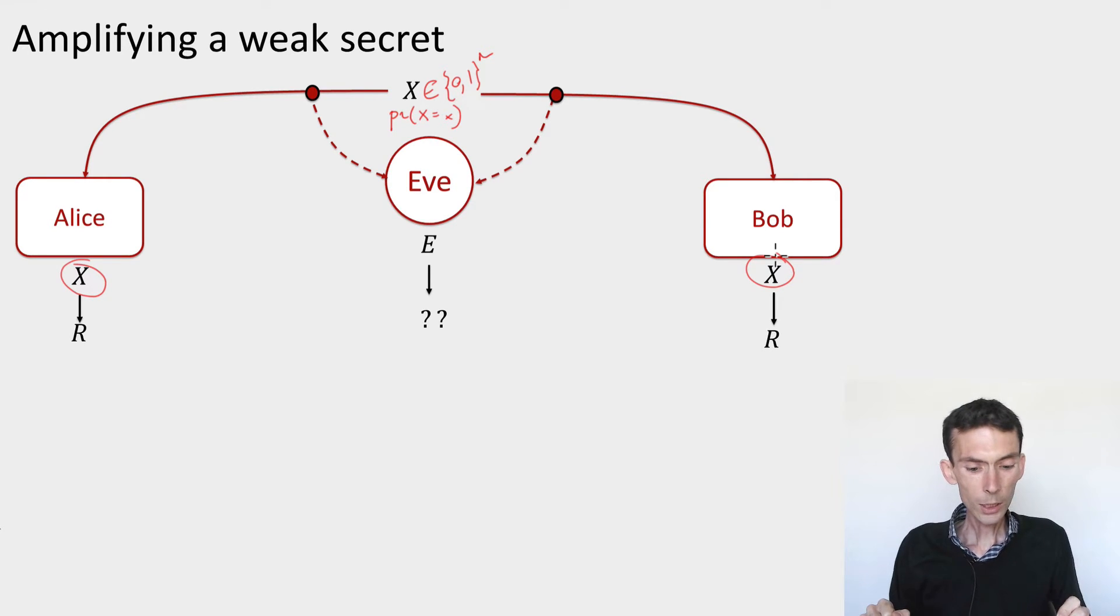It also is the case that on this imperfect private channel or public channel used to communicate x to both Alice and Bob, an eavesdropper, Eve, might have been listening in and could have kept some side information about the string x. For instance, e could be the first bit of x, x1. Or for instance, e could contain all the even bits of x: x2, x4, x6, etc.